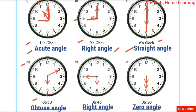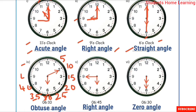Next — 6:10. The short hand is at 6 and the long hand is at 2. Using the 5 times table: 5 ones are 5, 5 twos are 10, 5 threes are 15, 5 fours are 20, 5 fives are 25, 5 sixes are 30, 5 sevens are 35, 5 eights are 40, 5 nines are 45, 5 tens are 50, 5 elevens are 55, 5 twelves are 60.